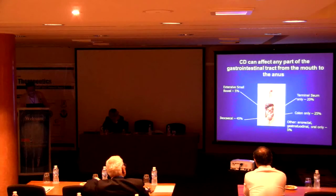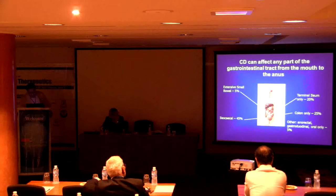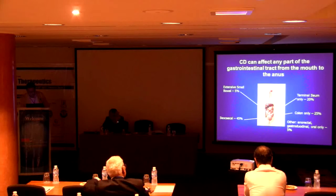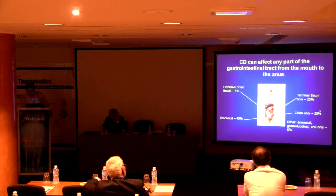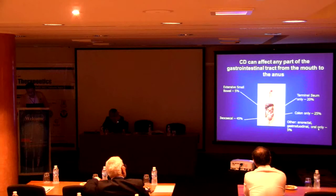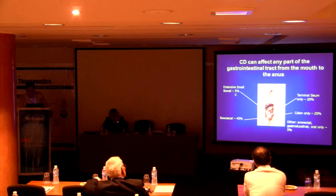Crohn's disease can affect any part of the GI tract from the mouth to the anus. Ileocecal lesions account for about 45 percent; terminal ileum only is about 20 percent; colon about 25 percent; anorectal or oral about 5 percent; and extensive small bowel lesions about 5 percent of cases.